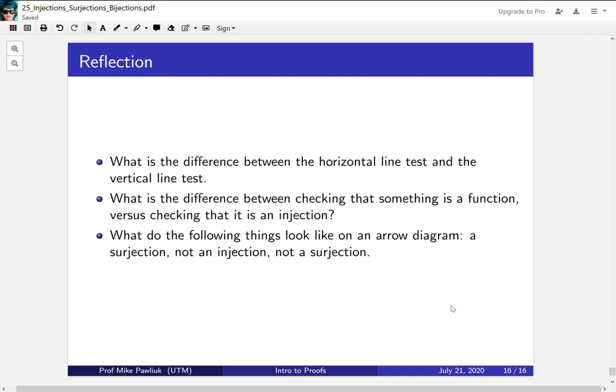Now let's take some time to reflect. What is the difference between the horizontal line test and the vertical line test? What is the difference between checking that something is a function versus checking that it is an injection? What do the following things look like on an arrow diagram? A surjection, not an injection, and not a surjection.